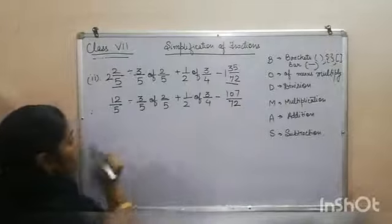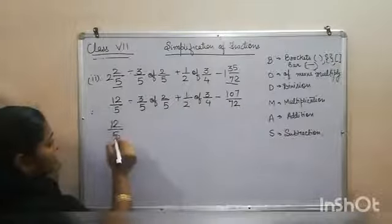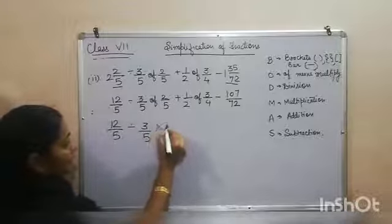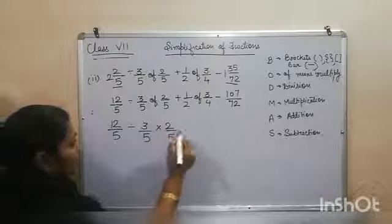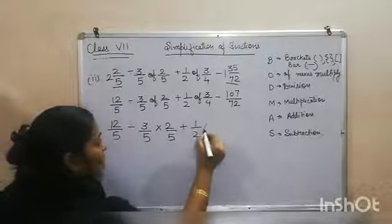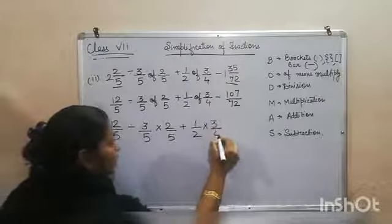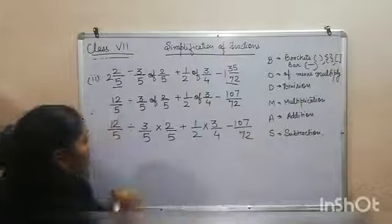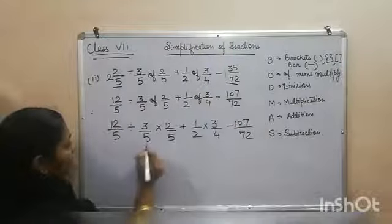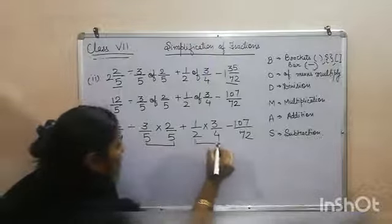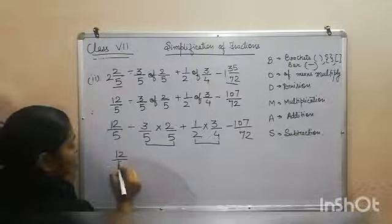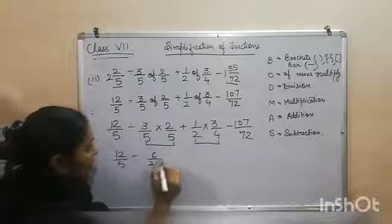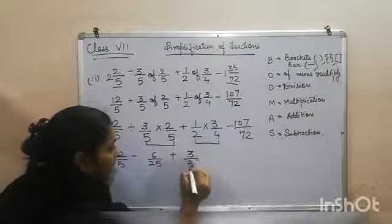We have to solve OF first. 12 by 5 divided by 3 by 5 into 2 by 5 plus 1 by 2 into 3 by 4 minus 107 upon 72. Now first of all, we have to solve the OF terms. That is 6 upon 25 plus 3 by 8.